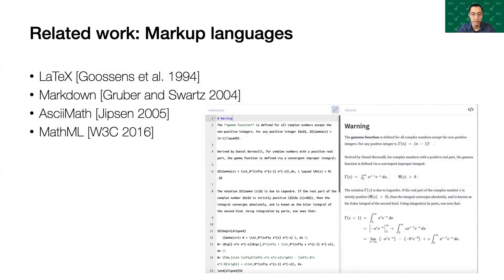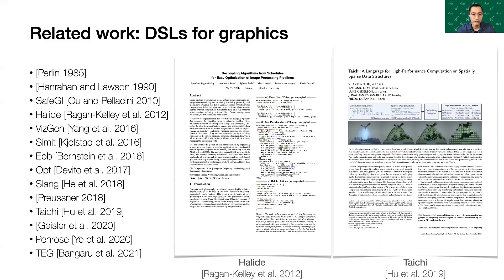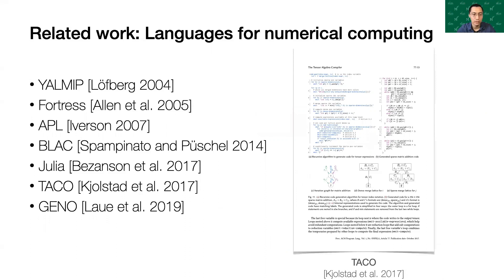There are several markup languages for writing mathematical notation in plain text, such as LaTeX, Markdown, AsciiMath, and MathML. These are not compilable. Domain-specific languages that aim to make computer graphics practitioners more productive have a long history, such as Halide, Taichi, etc. Other than Penrose, they don't look like math.